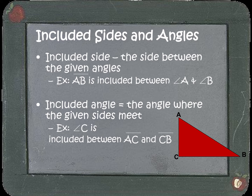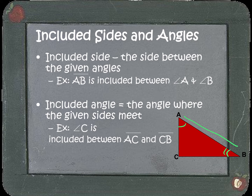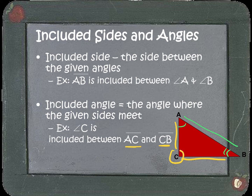In order to understand how to use side angle side, we need to cover two definitions. The first is the definition of an included side — the included side is the side that is between the given angles. For example, in my red triangle, if I ask you what is the included side between angles A and B, it's the side in between those two angles, which would be side AB.